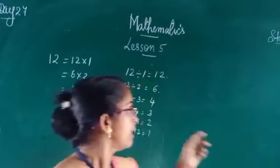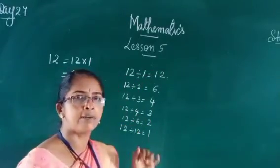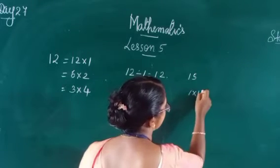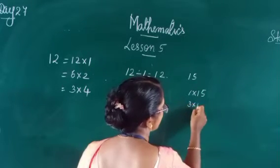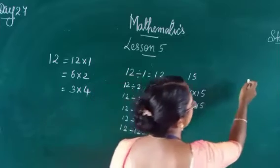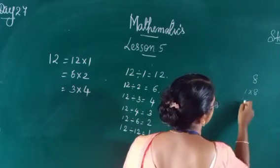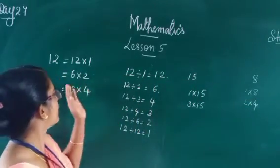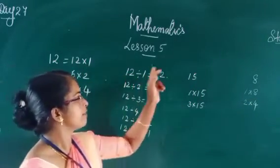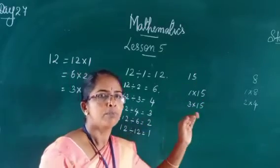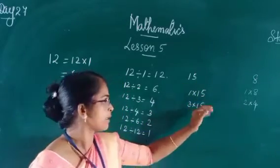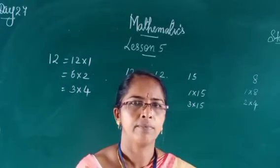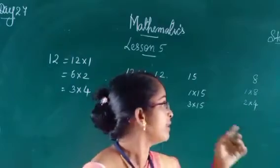Now consider the number 15. 15 can be expressed as 1 into 15 and 3 into 5. Another number, 8: 1 into 8, then 2 fours are 8. In all these cases, 1 is a factor. So, for the properties of factors: 1 is a factor of every number.